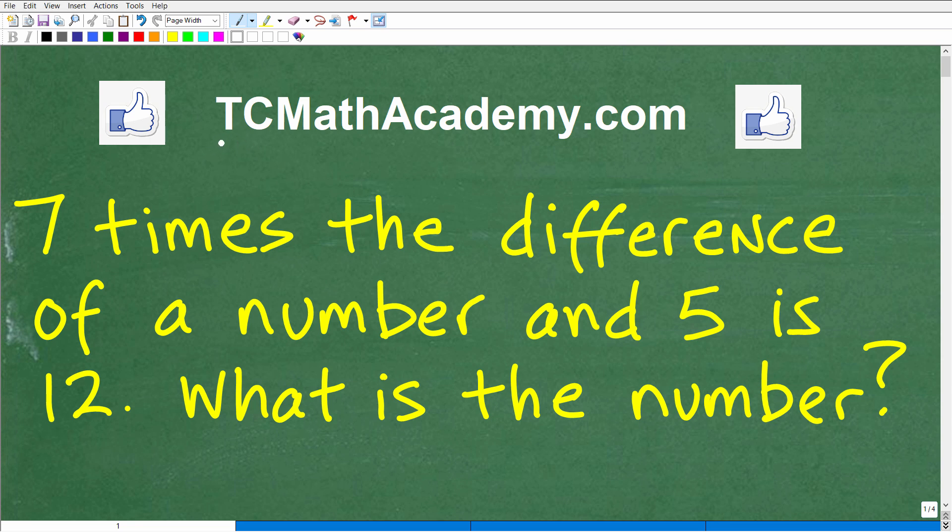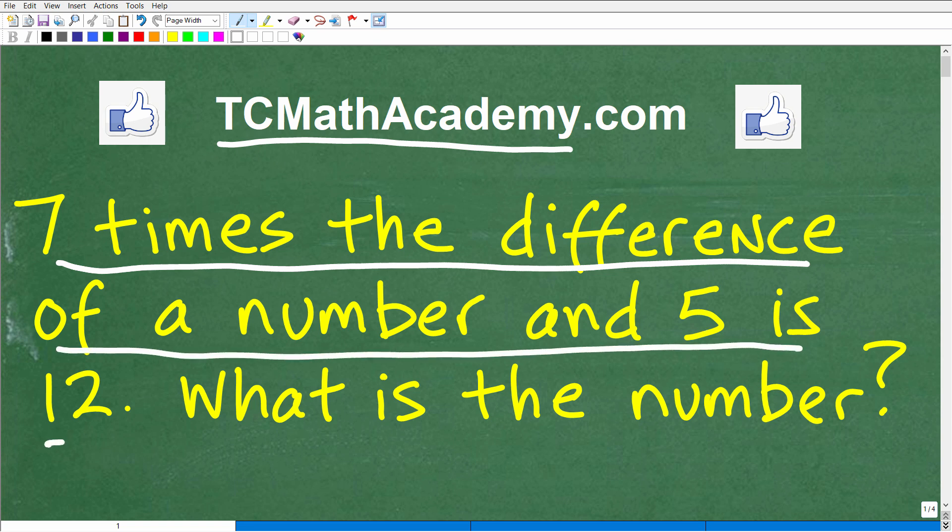Hello, this is John from TC Math Academy, and in this particular video we are going to solve this lovely little algebraic word problem. So it says 7 times the difference of a number and 5 is 12. What is the number?